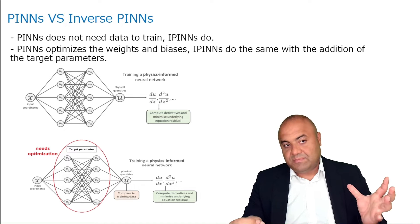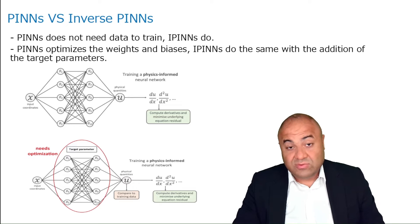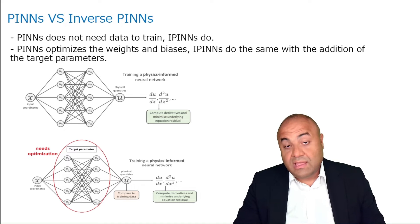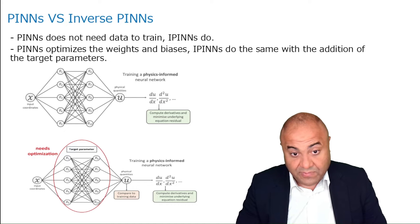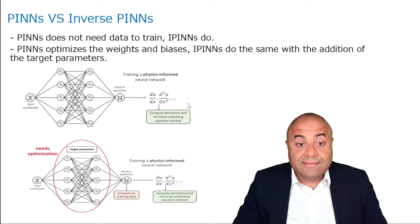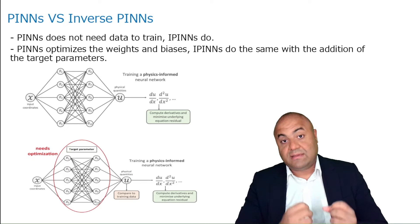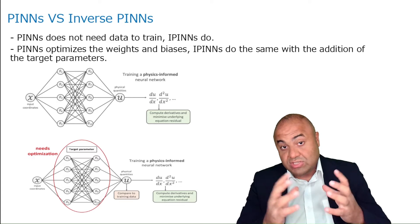What is the difference between PINNs and inverse PINNs? Basically, in inverse PINNs the governing equation has a missing value — a parameter we need to find — and we find it based on the data generated as a result of that governing equation. In a standard PINNs problem, you have a complete governing equation plus initial and boundary conditions, and based on that you compute the loss to get the final solution.